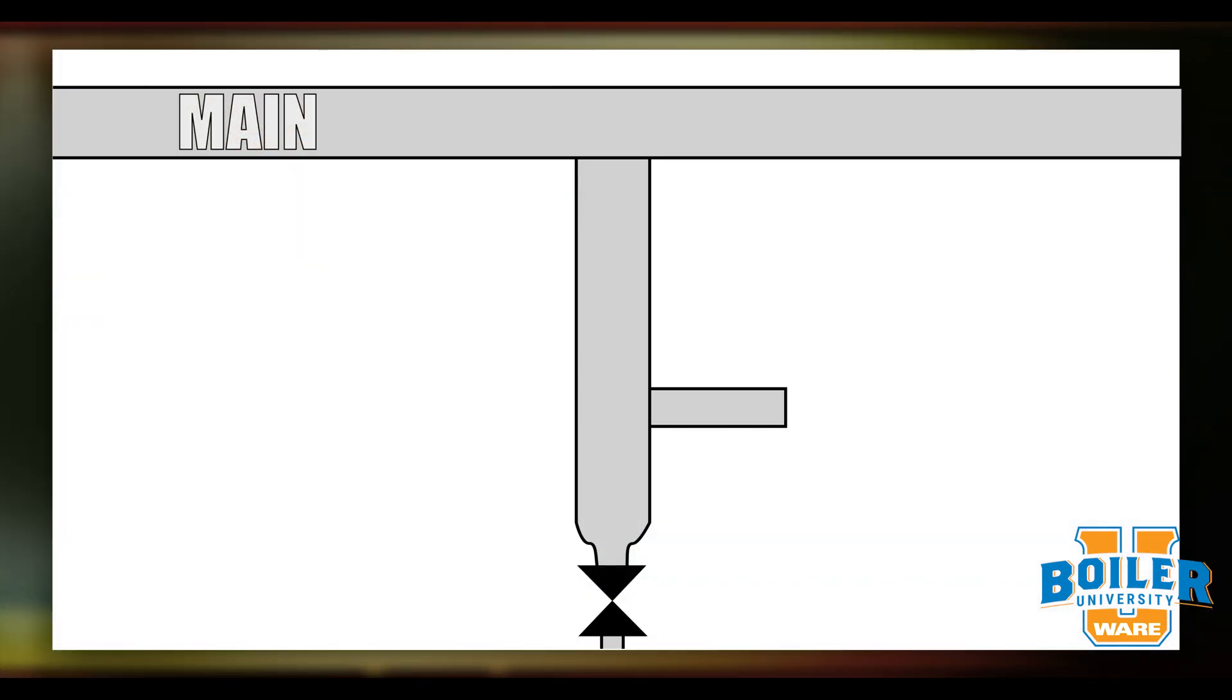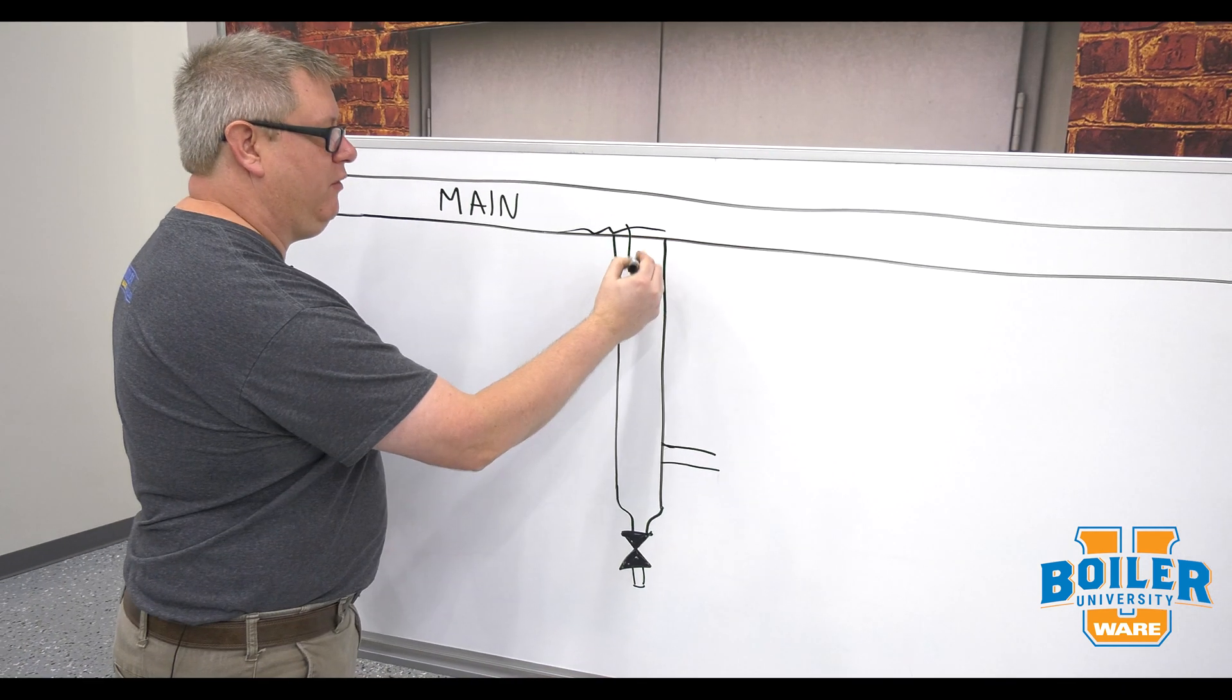So here we've got a main steam line, let's say it's three inch, so we're going to go ahead and use a full line size drip leg and that's so that our condensate can't just skip over, it's going to fall down in there.